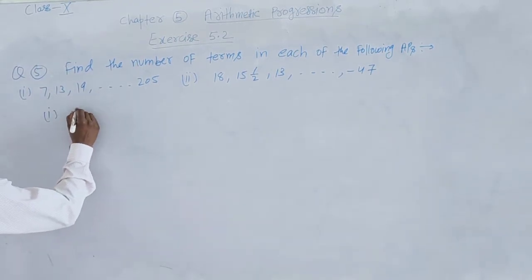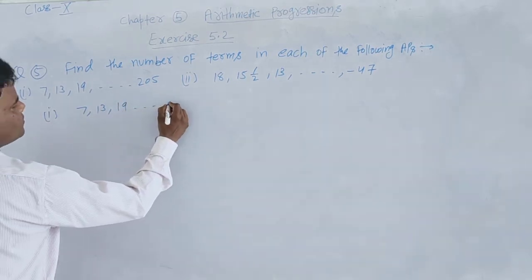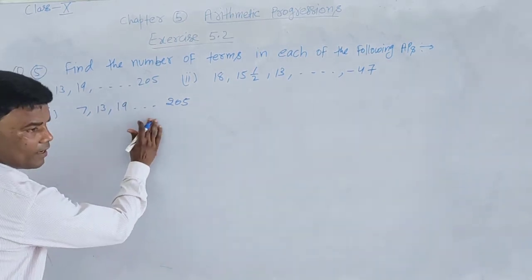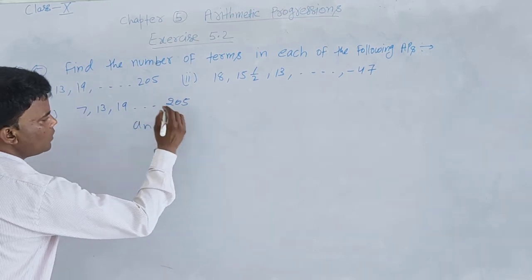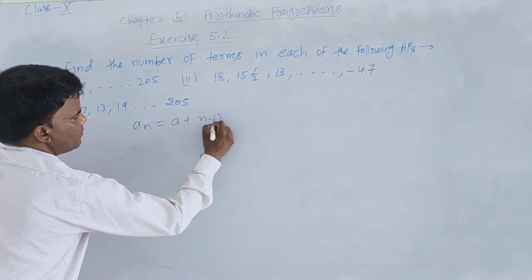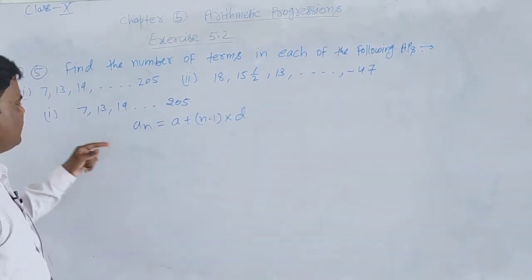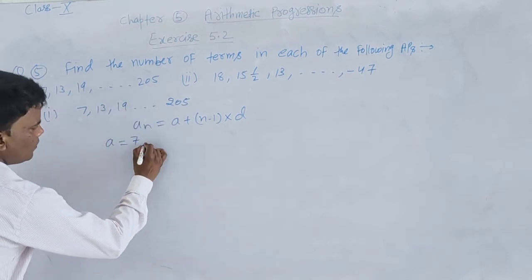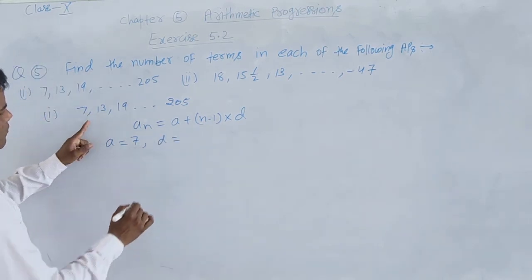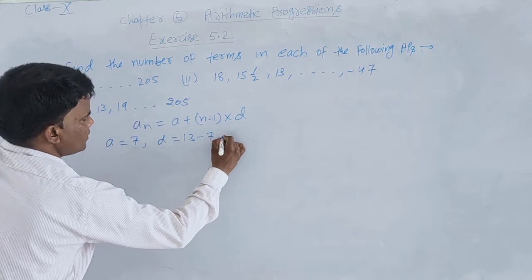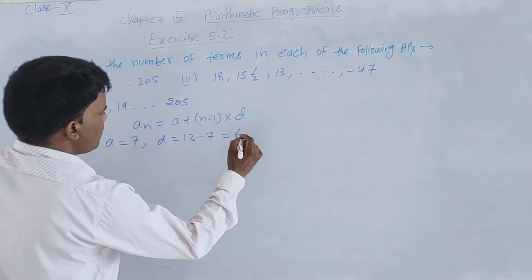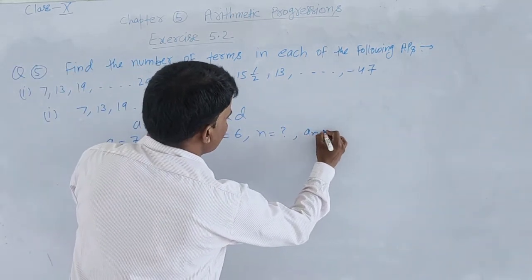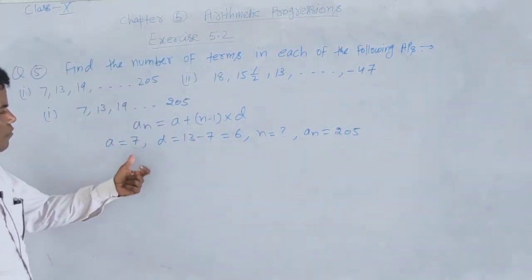First part: the AP is 7, 13, 19, ..., 205. We need to find the number of terms, meaning the value of n. We use the nth term formula An = a + (n−1) × d. In this AP, the first term a = 7. For common difference: d = a2 − a1 = 13 − 7 = 6. The value of n is unknown. The last term An = 205.